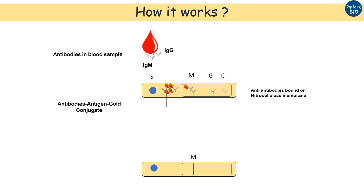The second line is the G line which contains anti-IgG antibodies that bind to the conjugate antibodies in the sample and produce a red color.